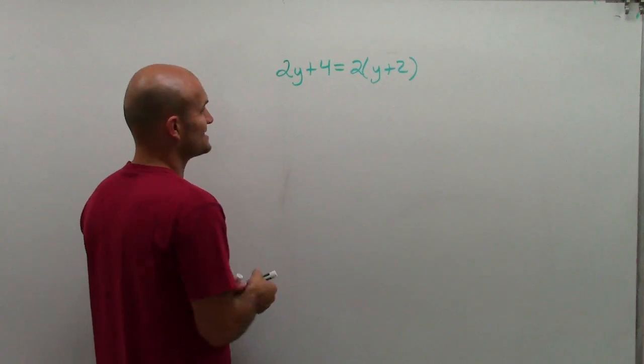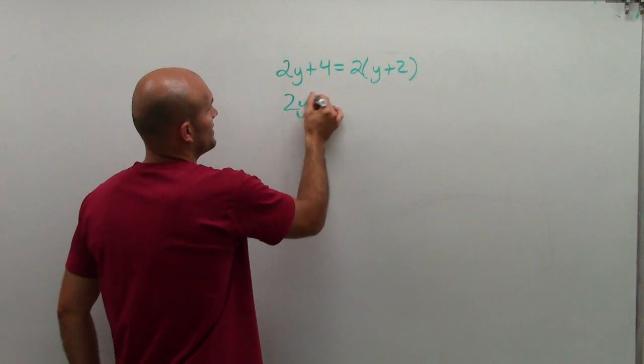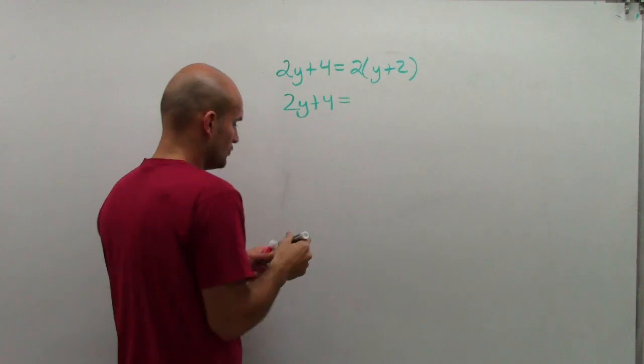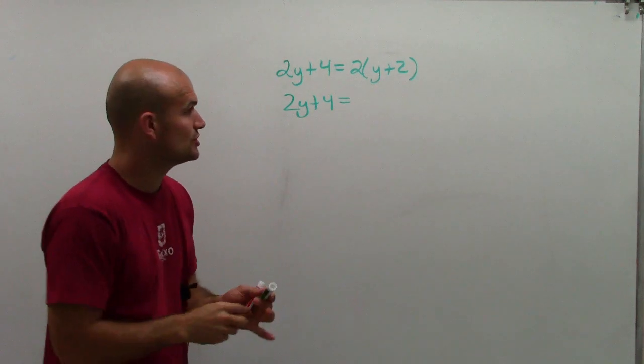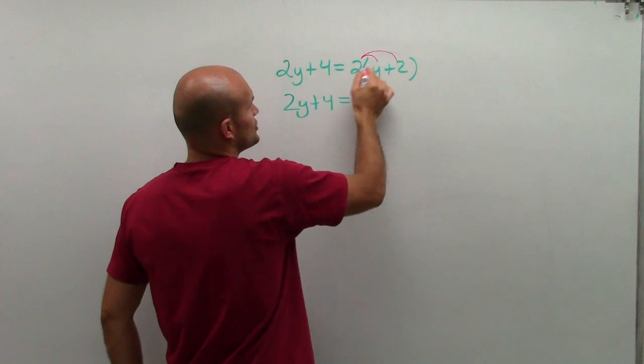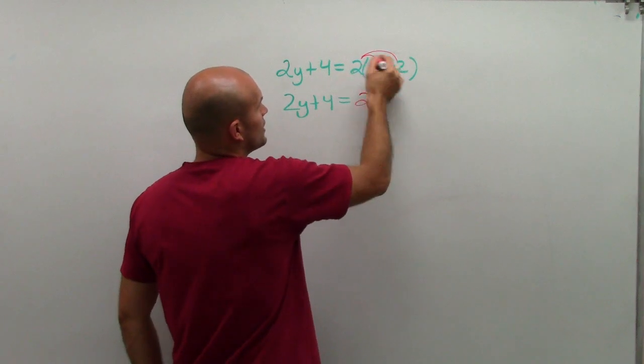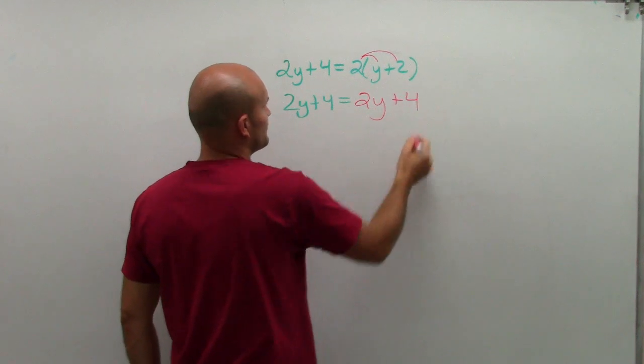So 2y plus 4, I can't simplify that at all. So I'm just going to rewrite it, equals 2 times y plus 2. So I have to make sure I do the distributive property. 2 times y is 2y. 2 times 2 is a positive 4.